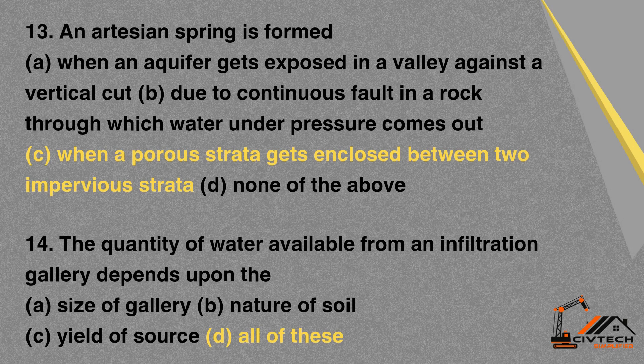MCQ 13: An artesian spring is formed — A. When an aquifer gets exposed in a valley against a vertical cut. B. Due to a continuous fault in a rock through which water under pressure comes out. C. When a porous strata gets enclosed between two impervious strata. D. None of the above. Correct option: C. When a porous strata gets enclosed between two impervious strata.